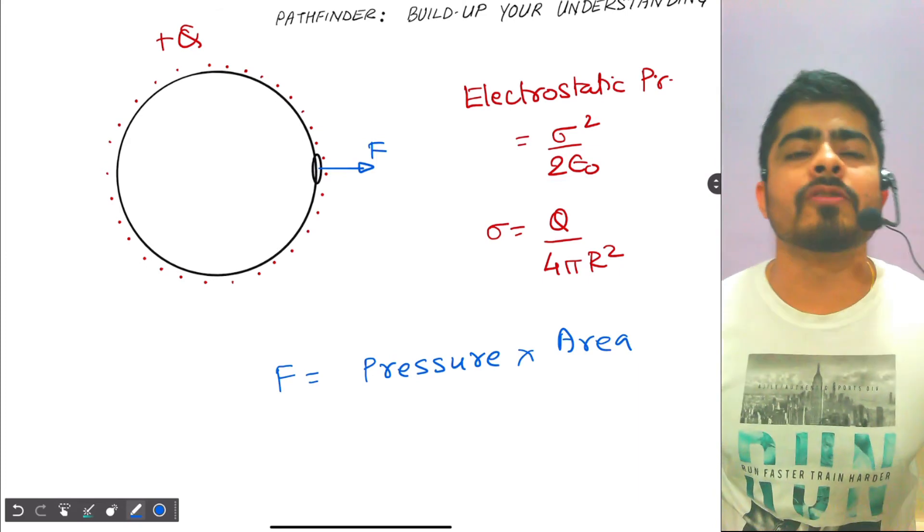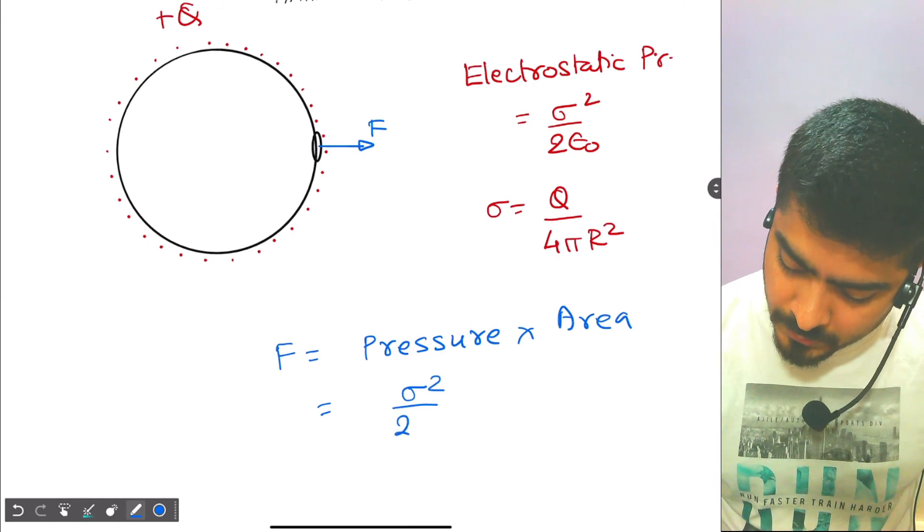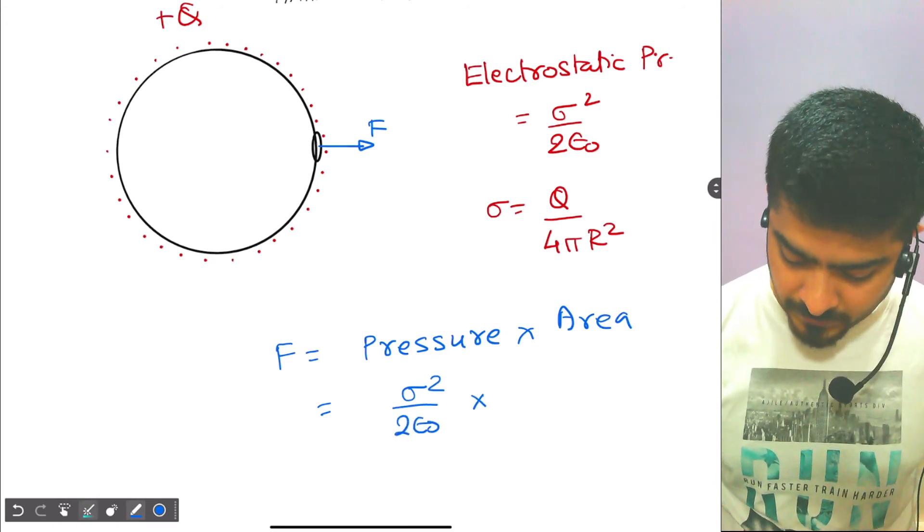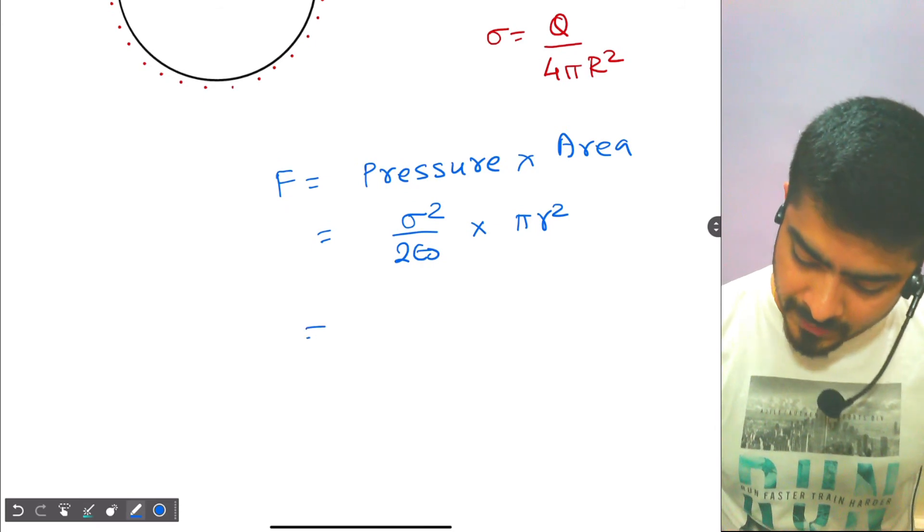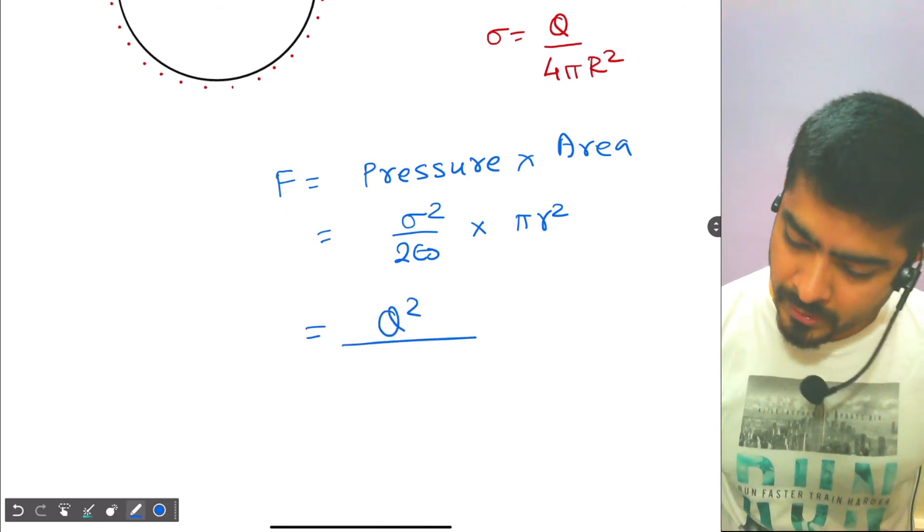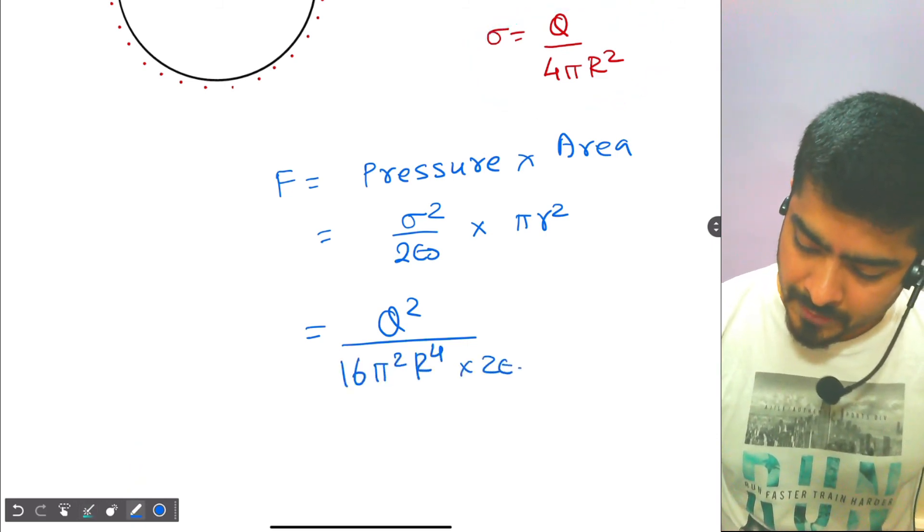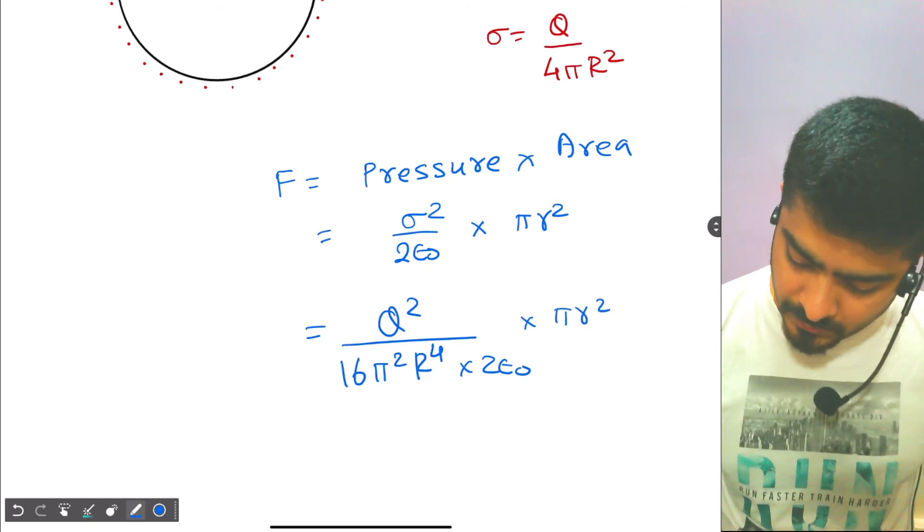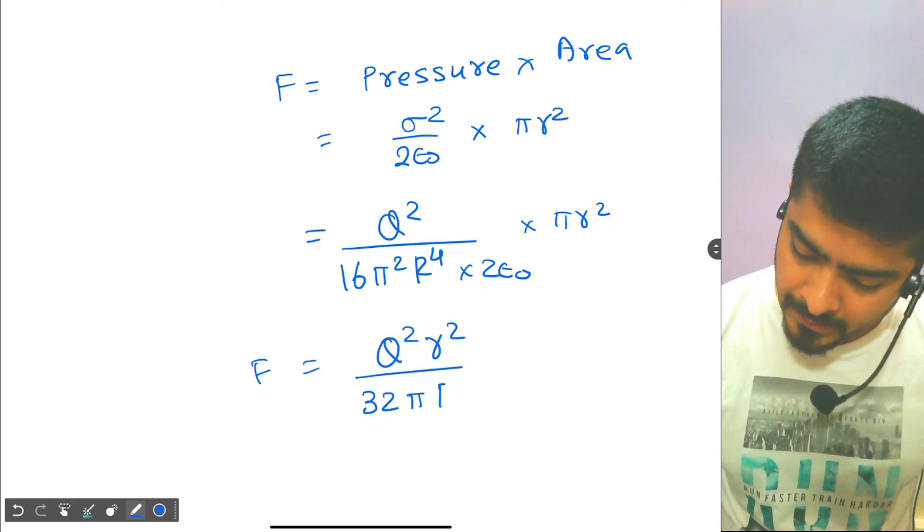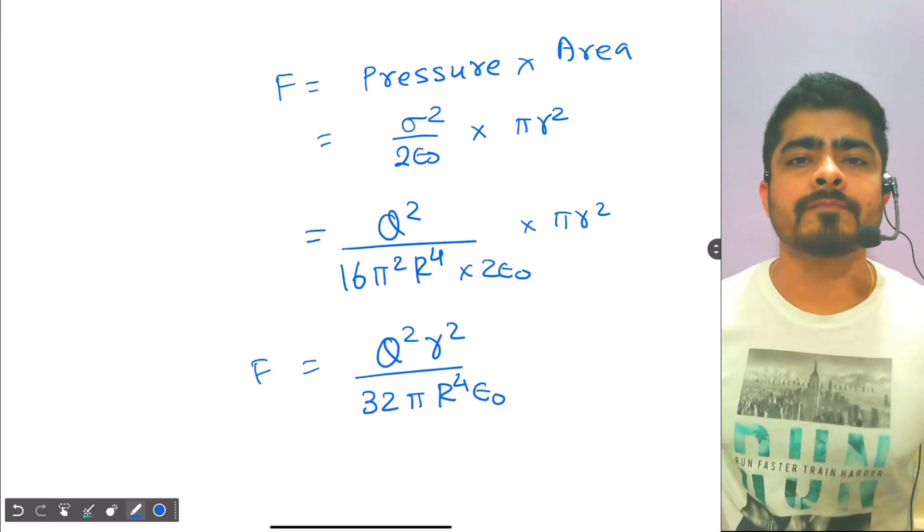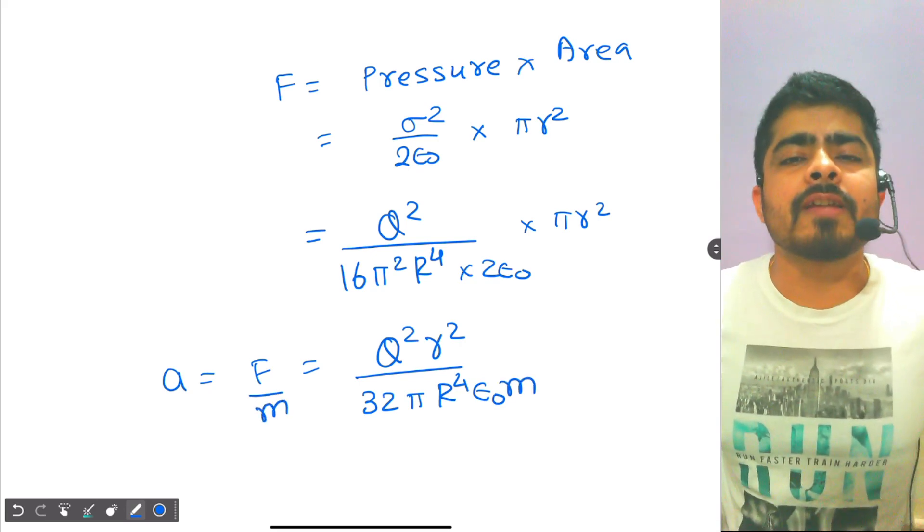Now you just need to put the values and solve. Pressure is sigma square by 2 epsilon naught, and area of the disc is pi r square. Now just put the values. So sigma square will be Q square by 16 pi square r power 4 times 2 epsilon naught times pi r square. So when you rearrange this, you get the force to be equal to Q square r square by 32 pi r power 4 epsilon naught. And then you want to find the acceleration, so acceleration will be force by mass. Just put the mass of the disc over here. That's it, this is your answer.